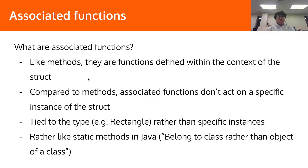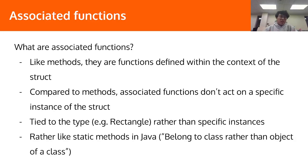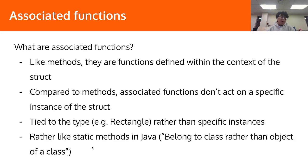The last thing I want to cover is associated functions. Associated functions are very similar to methods in that they are functions defined within the context of the struct, so they have some relationship with the struct. However, associated functions do not act on a specific instance — only methods act on specific instances. The functions themselves are related to the type. For people familiar with Java, this is a bit like static methods, where the methods belong to the class rather than an object of the class.